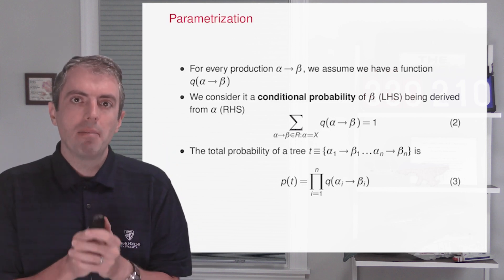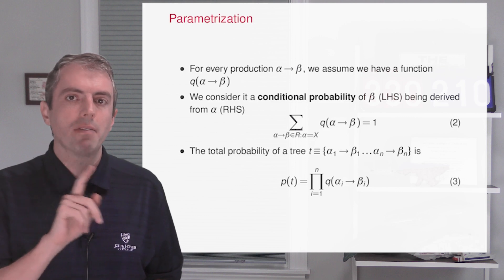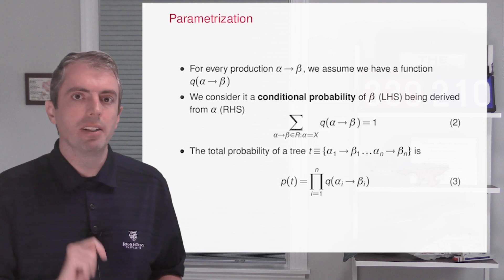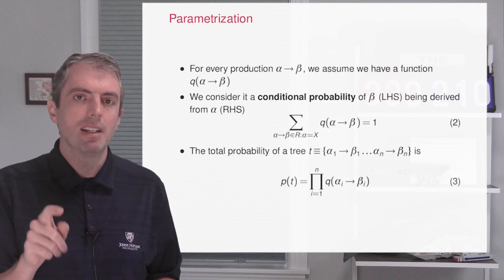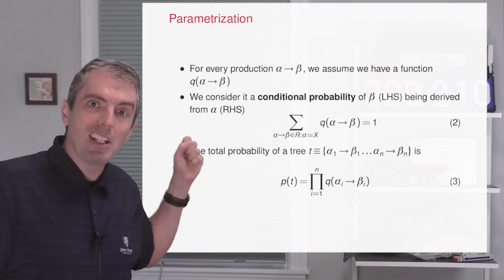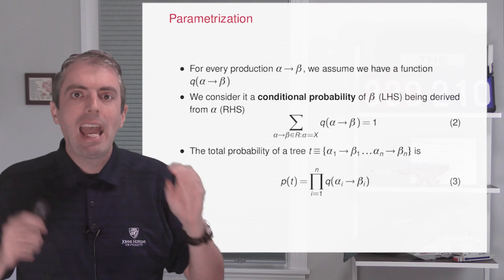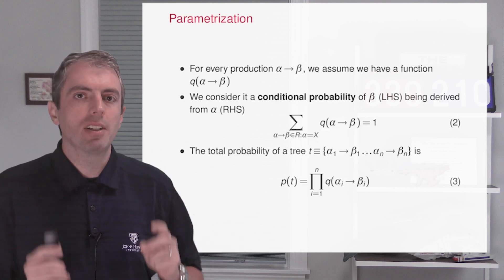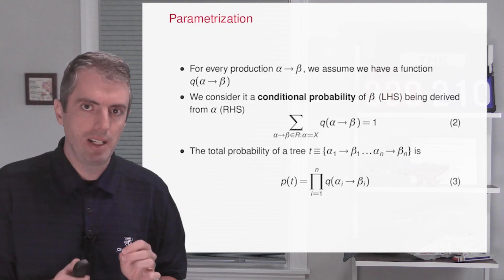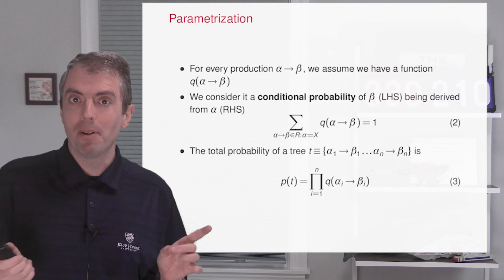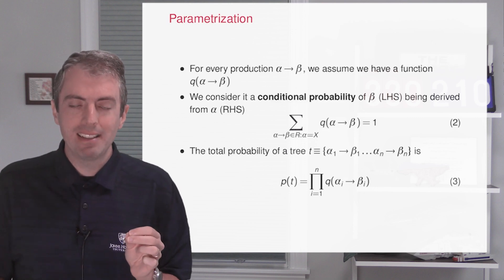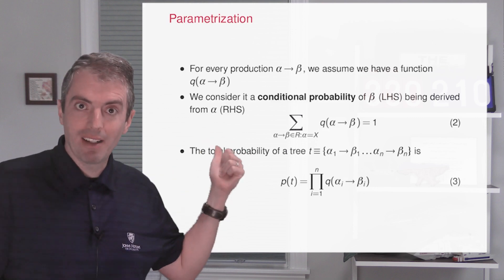To parameterize a probabilistic context-free grammar, what we're going to do is assume that for every production, we have some function q that tells us the conditional likelihood of having that derivation. So we're going to condition on the left-hand side, and then we're going to ask what is the probability that the left-hand side turned into the right-hand side. And given the probability of each of these individual productions, the probability of the entire tree is the product of all of the productions in the tree. This is connected to the context-free property, because we only care about what the production is, and this is independent. That makes the calculation really easy to do.